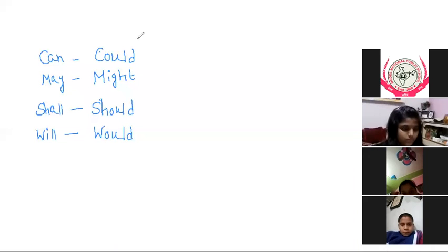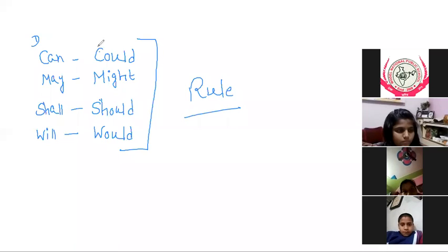Okay, so this is one rule. If we have direct speech and this is our indirect speech, if we have can, may, shall, or will in direct speech, then when we change to indirect we change to could, might, should, or would. Okay, this is one rule.